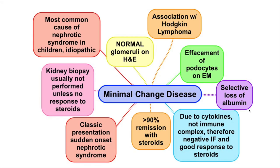There is a selective loss of albumin. It's not due to immune complex but due to general inflammation. Because it's not due to immune complex deposition, immunofluorescence will be negative. You'll also have a good response to steroids — over 90% remission. Classically it presents as a sudden onset nephrotic syndrome. Usually they don't need a biopsy unless there's no response to steroids.